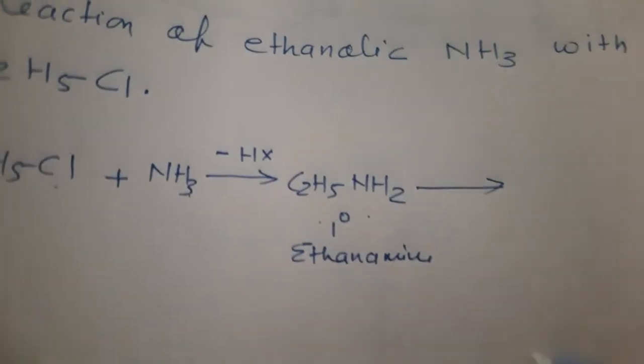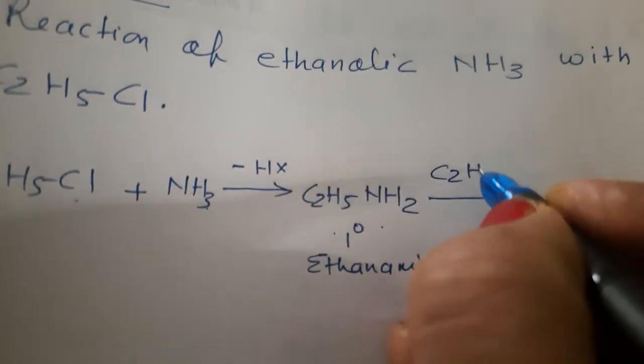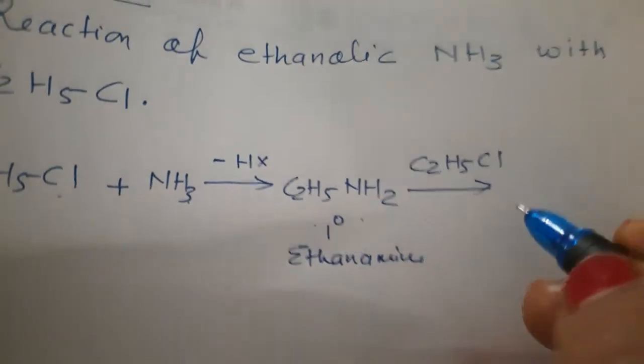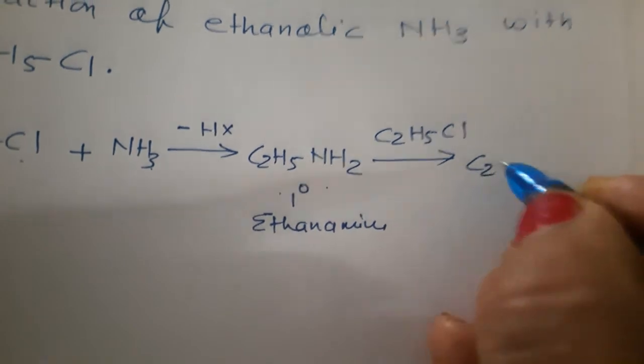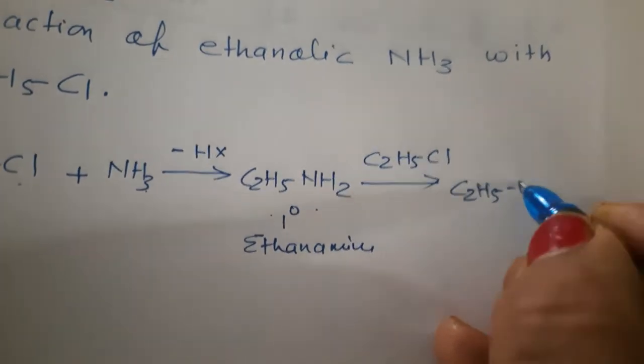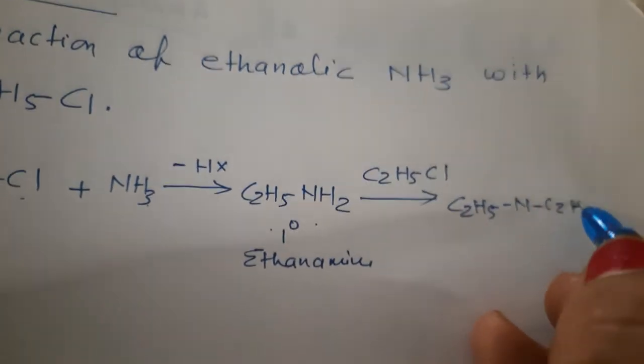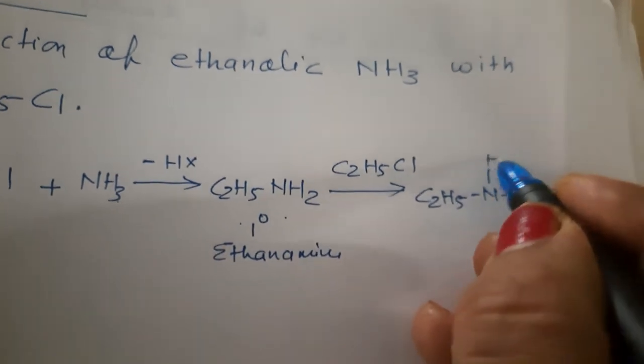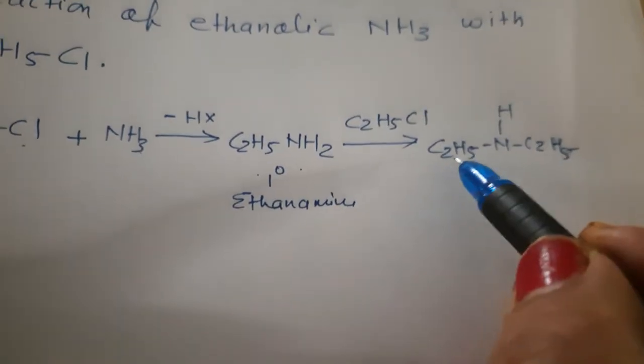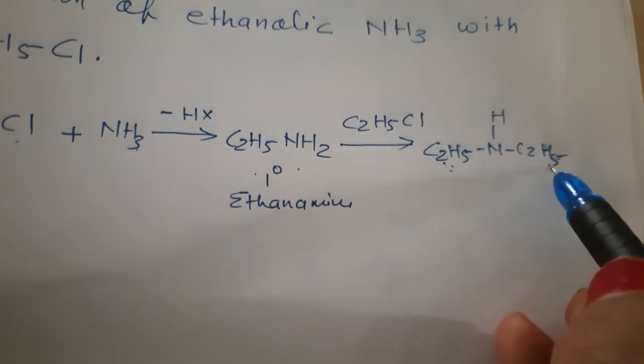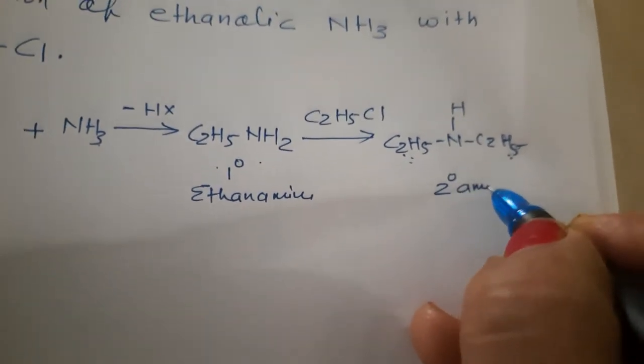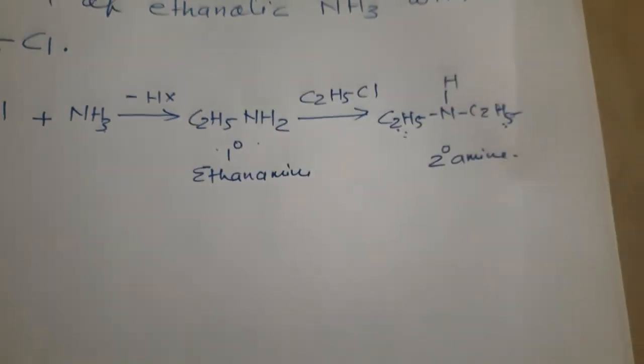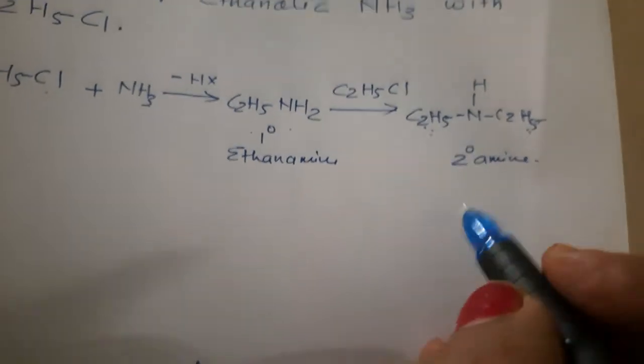This C2H5NH2, when it will be treated again with same halide, C2H5Cl, it will form, one more hydrogen will be removed. So, it will form C2H5-N-C2H5 and here H will be there. You see, two alkyl groups are added now. This is the two degree amine.